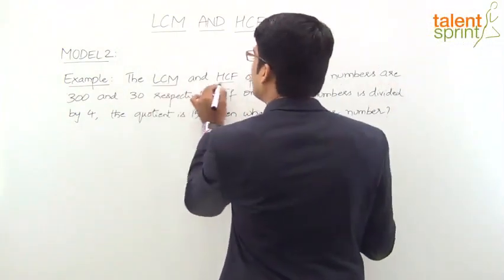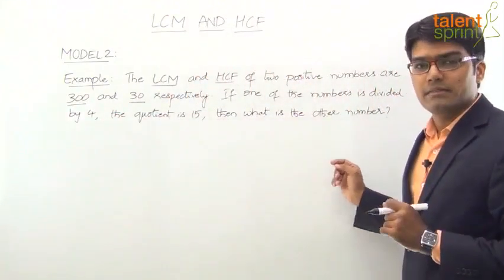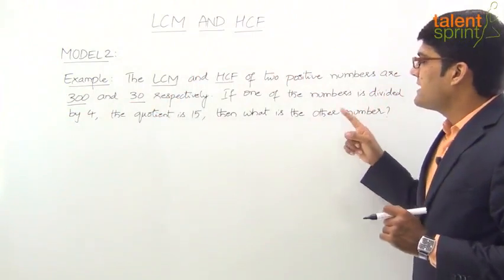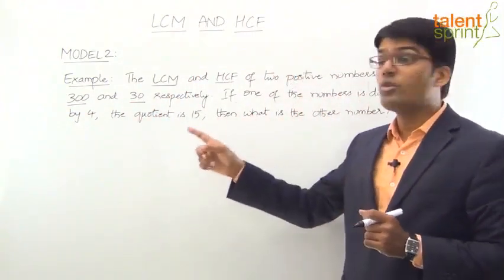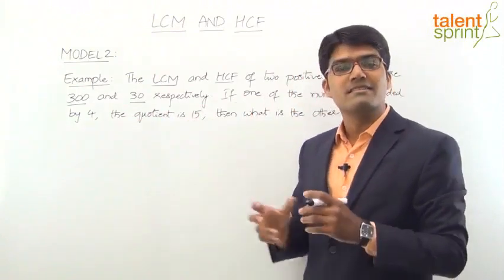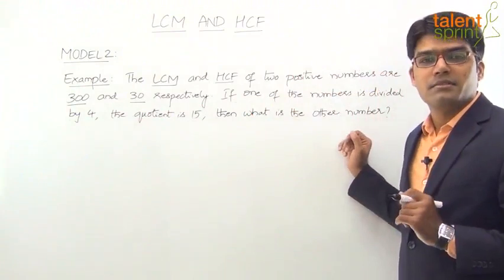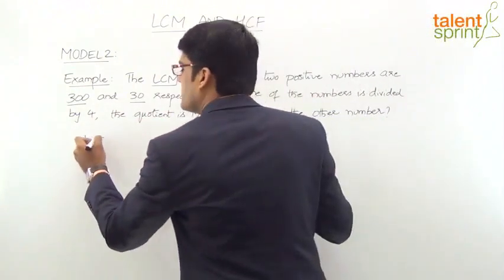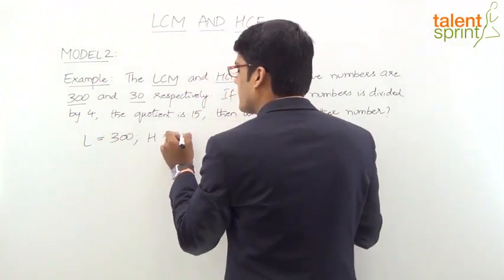So let's see, when we divide this number, if one of the numbers is divided by 4, the quotient is 15. We will find out what is the other number. So, LCM is 300 and HCF is 30.